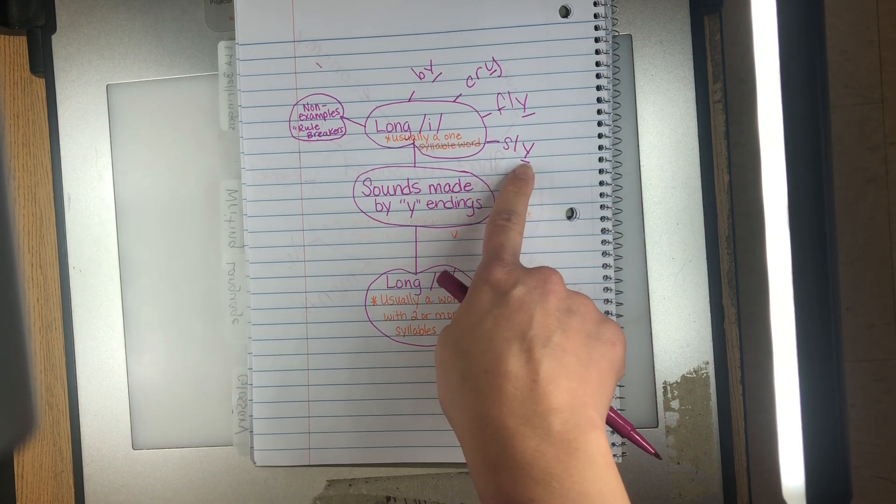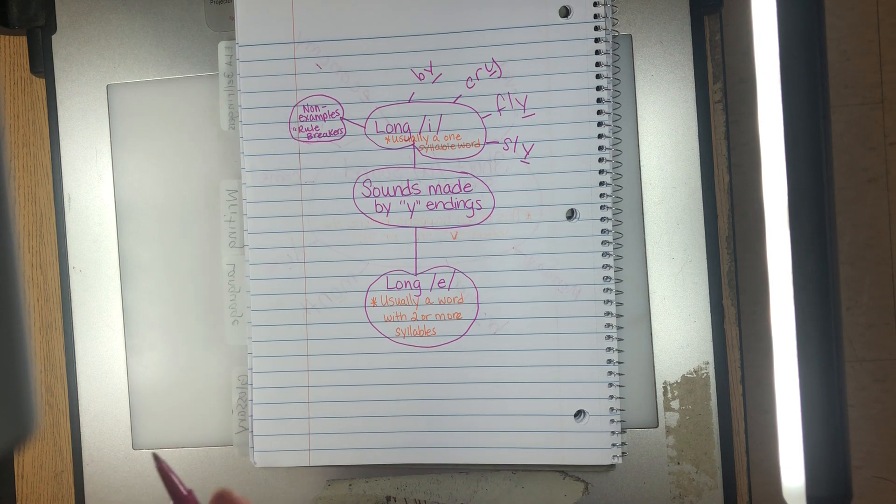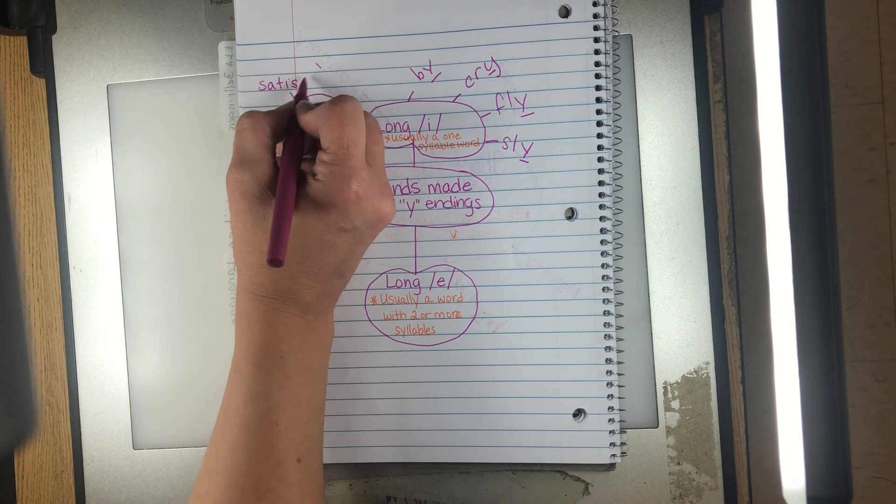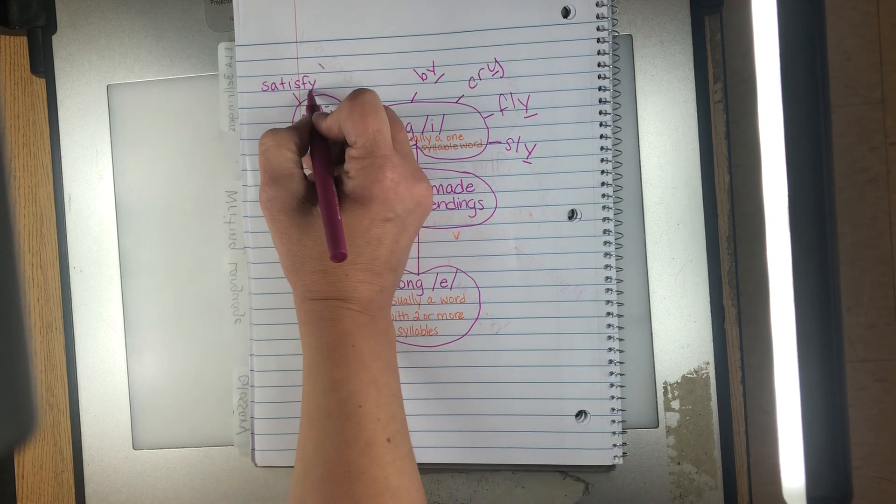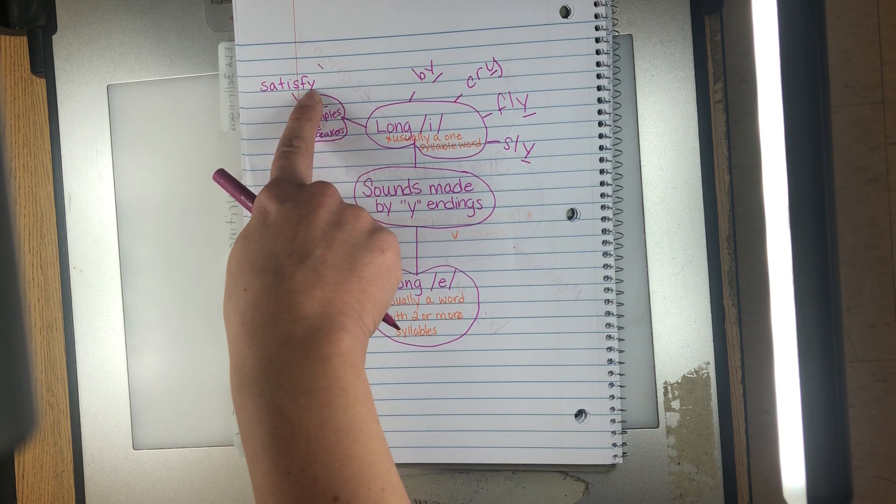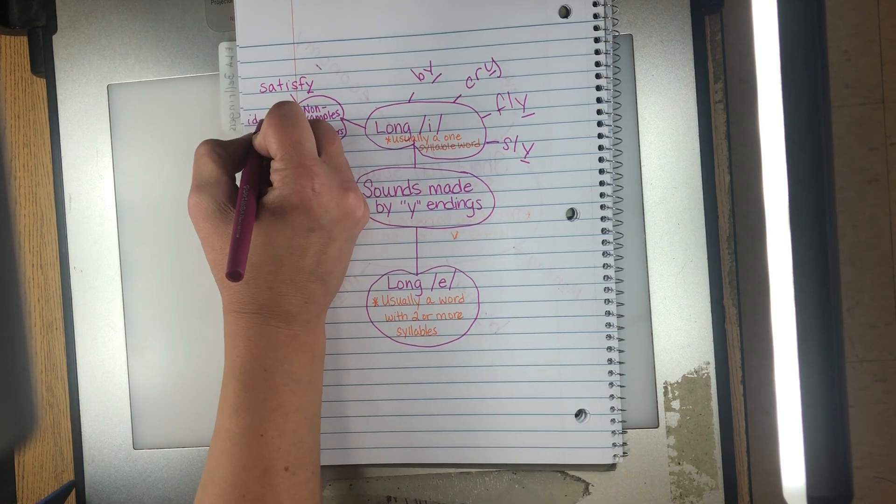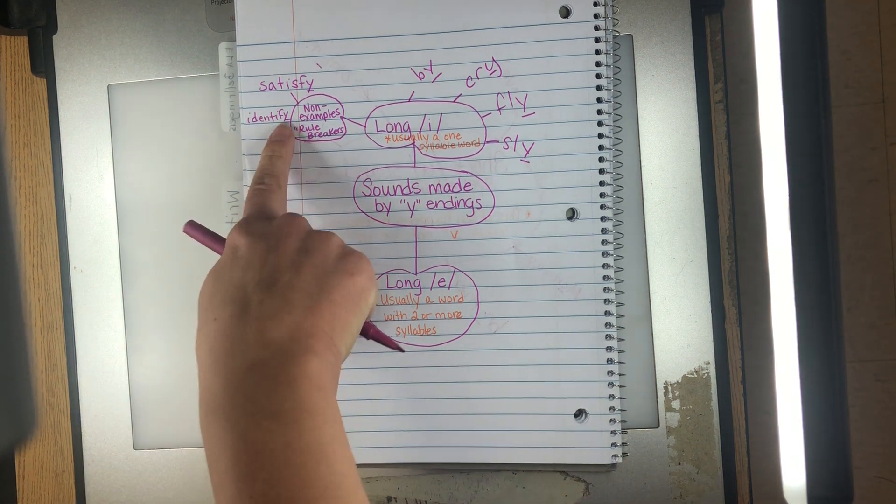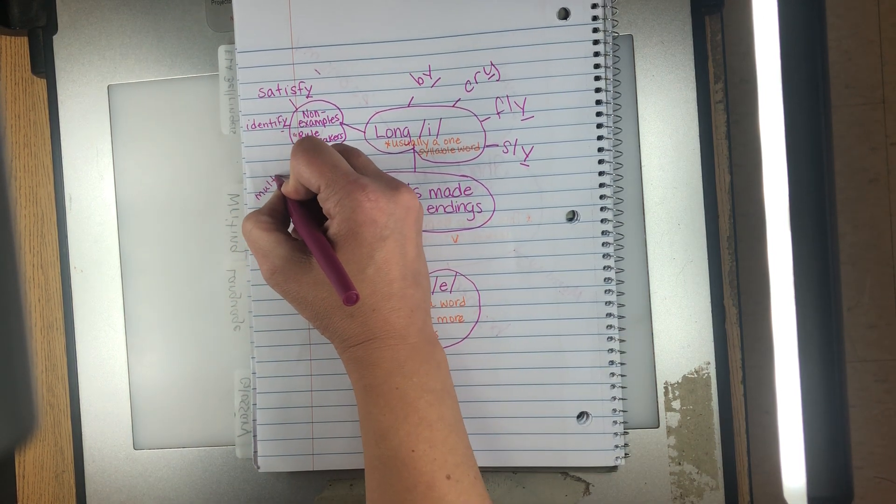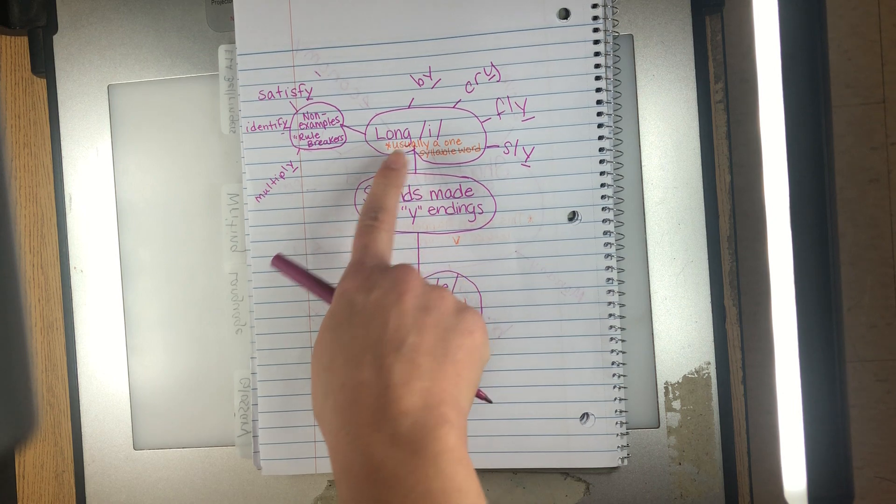Those are one syllable words and we hear a long I sound with the Y. Some non-examples, we've actually seen some of these in our social studies lessons. We have satisfy. So I hear a long I sound, but this is definitely more than a one syllable word, okay? We have - for our three vowel sounds, this is going to be a three syllable word. We've been seeing the word identify. I hear a long I. What about the word multiply?